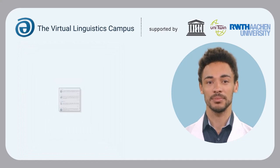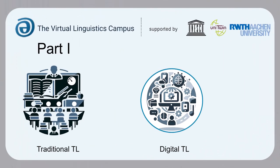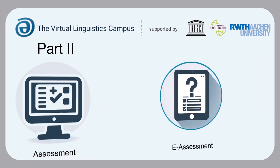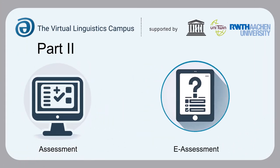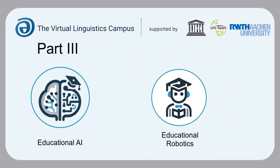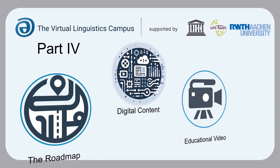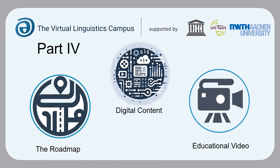The first part discusses the general principles of learning, from traditional to digital. In part two, we will look at assessment — again traditional first and then the new digital options. The third part focuses on the integration of AI methodology and the use of humanoid robots, not only in terms of future but in terms of existing applications. Part four is practical: we will show you how you can digitize your content and discuss the role of educational video.